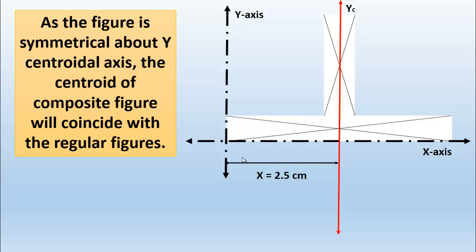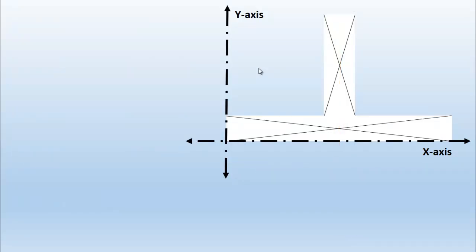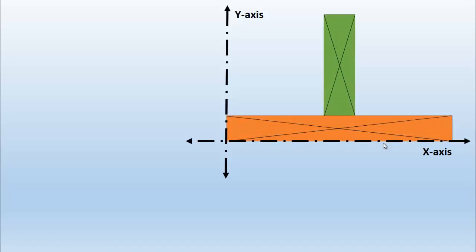The figure is not symmetrical about the horizontal X-axis because there is no such X-axis that can divide the figure into two equal halves. So we are going to determine the vertical centroid using the step-by-step method. The reference axes — Y-axis and X-axis — are already selected. We then divide the figure into two regular rectangles represented by green and orange, numbered 1 and 2.